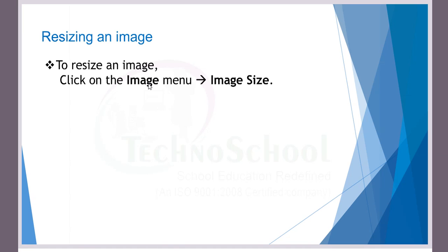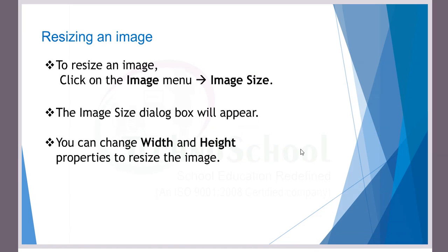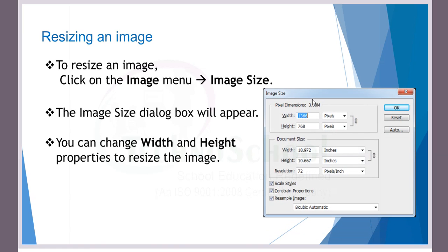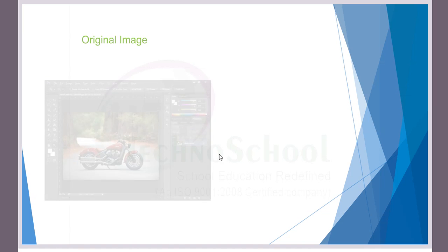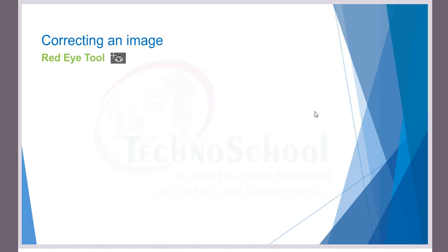For resizing an image, we go to the Image menu in the menu bar and click Image Size. A dialog box appears where we can change the height and width to resize the image. That's the original, and after resizing, this is how the image will look. That's the quick review of section 3.